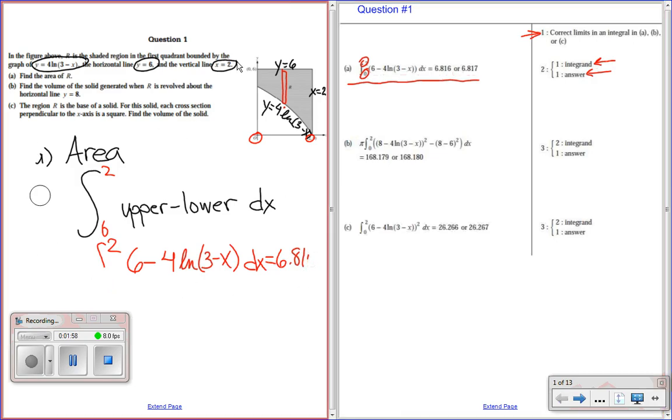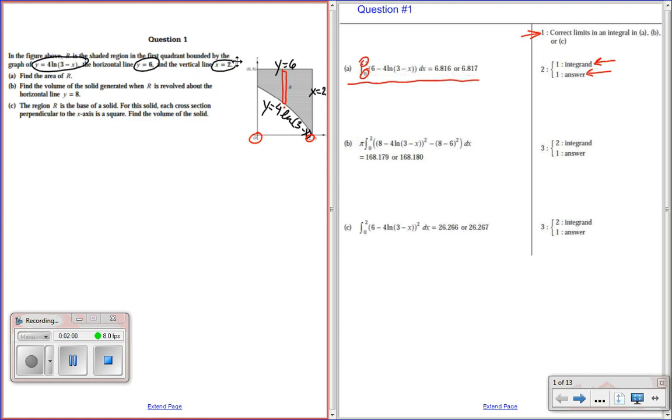So, now let's look at B. In B, we're asked to find the volume of the solid generated about the horizontal line, y equals 8. I really encourage you to draw this so that you don't make mistakes. So, y equals 8 is about here. And I'm going to take this solid here and I'm going to revolve it around y equals 8. So, we identify that as the washer method because it's not connected. And notice it's dx again.